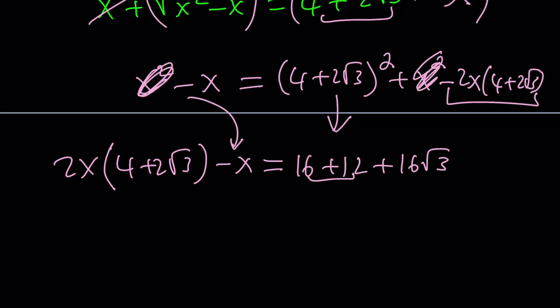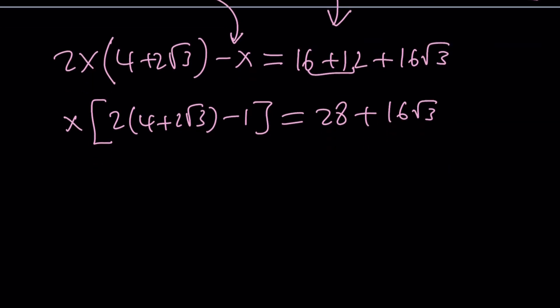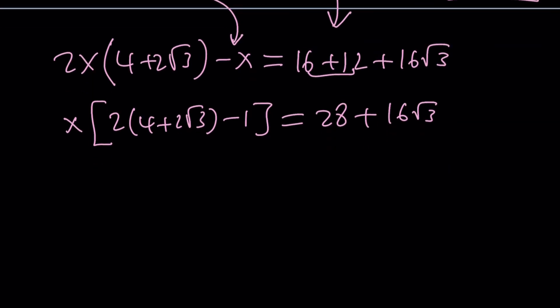Simplify as much as possible. We can actually factor out an x. That's going to give us 2 times 4 plus 2 root 3 minus 1 equals 28 plus 16 root 3. From here, we should do the following. Multiply, simplify. So it's going to be 8 minus 1, which is 7. 2 times 2 root 3 is going to be 4 root 3.